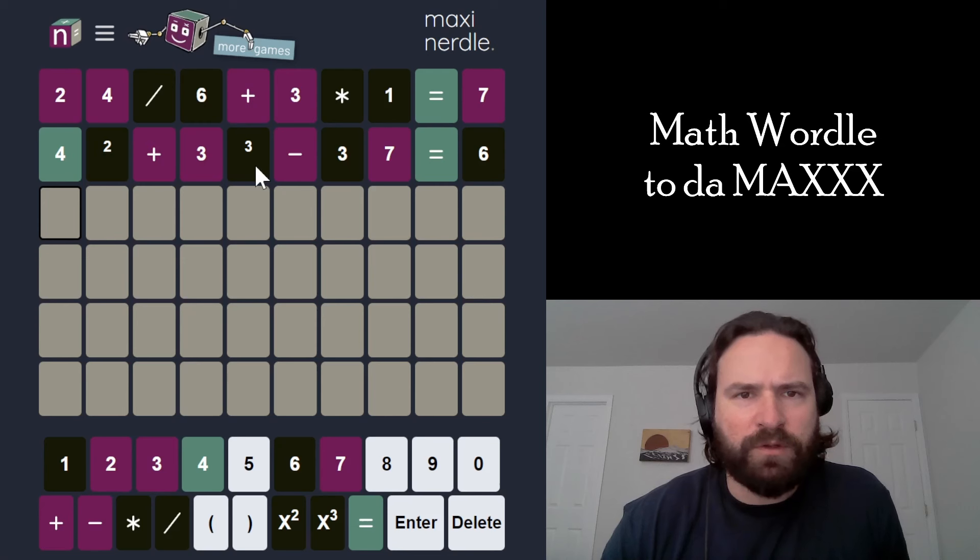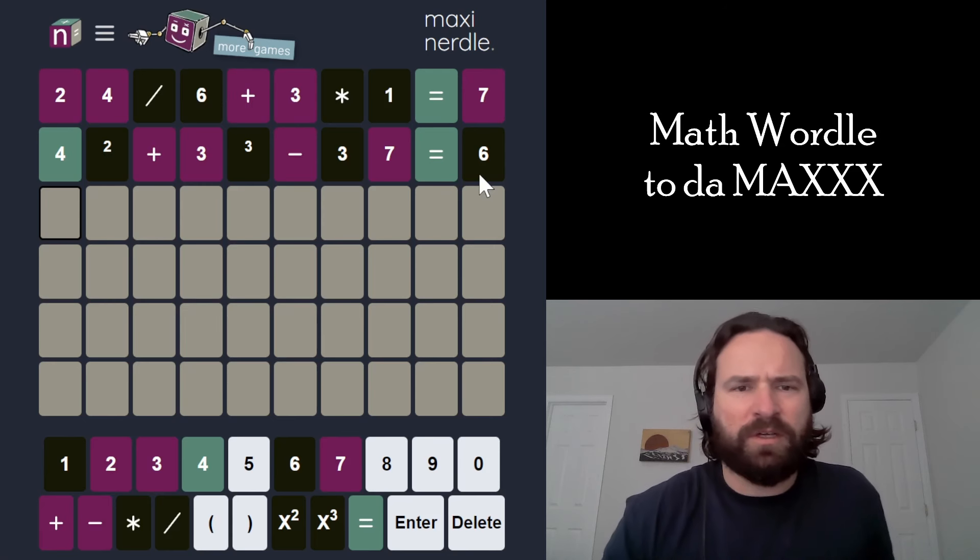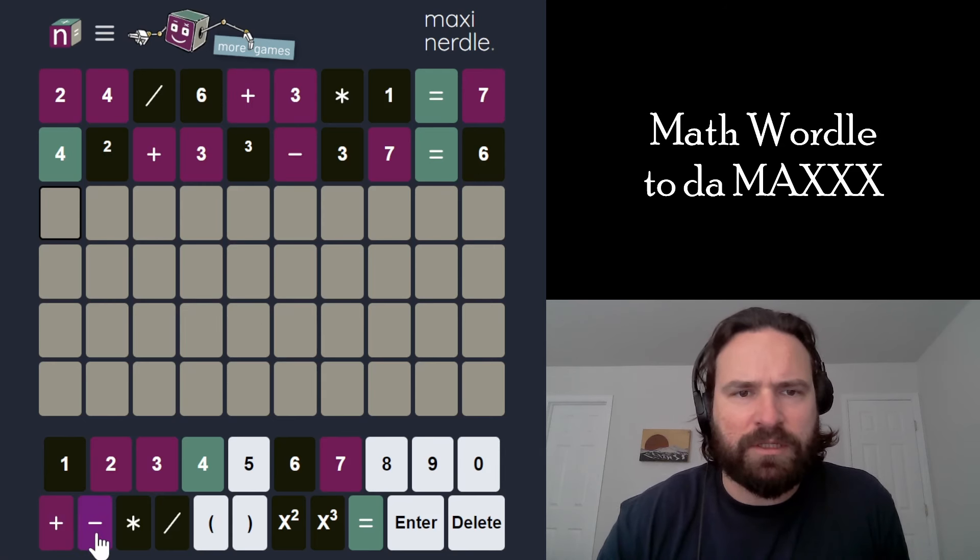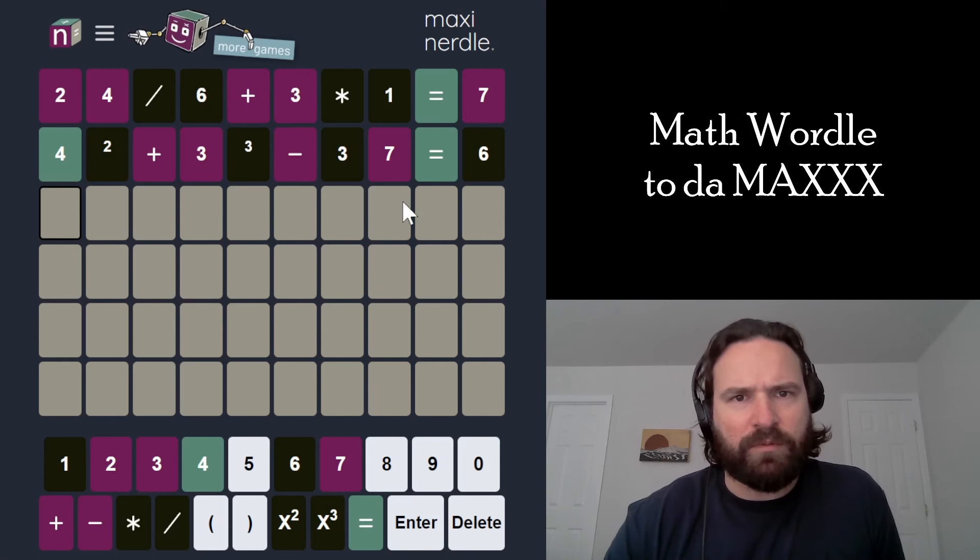Okay. So no squared or cubed. There is a subtraction. There had to be a subtraction if it's going to equal a single-digit number. Parentheses don't make a whole lot of sense if it's just addition and subtraction, but there could be parentheses. We just wouldn't need them in the equation.